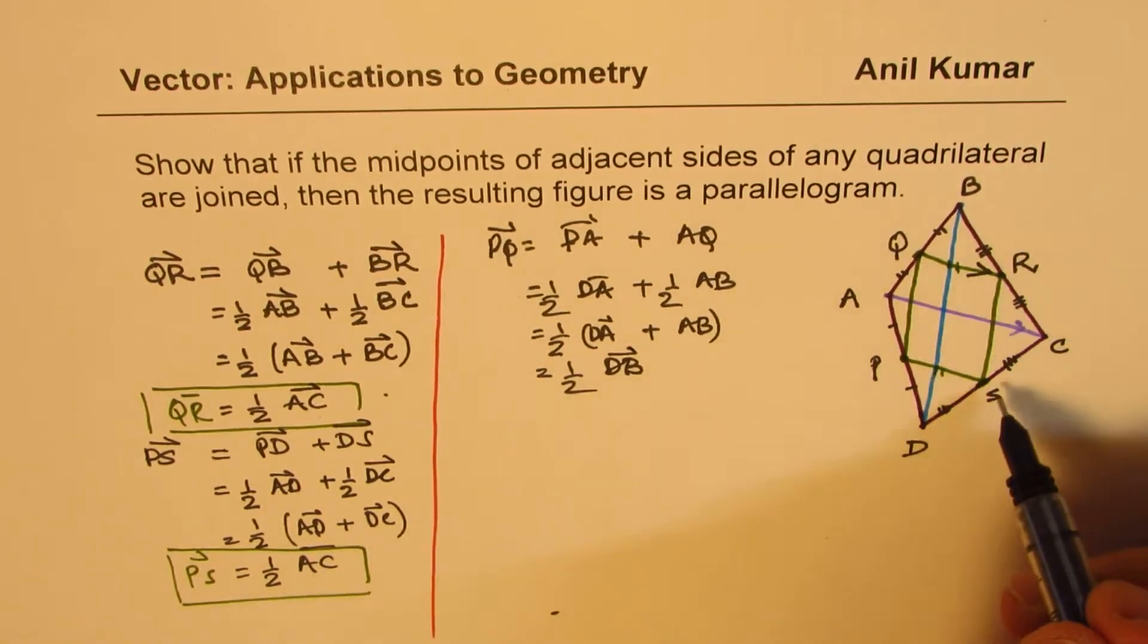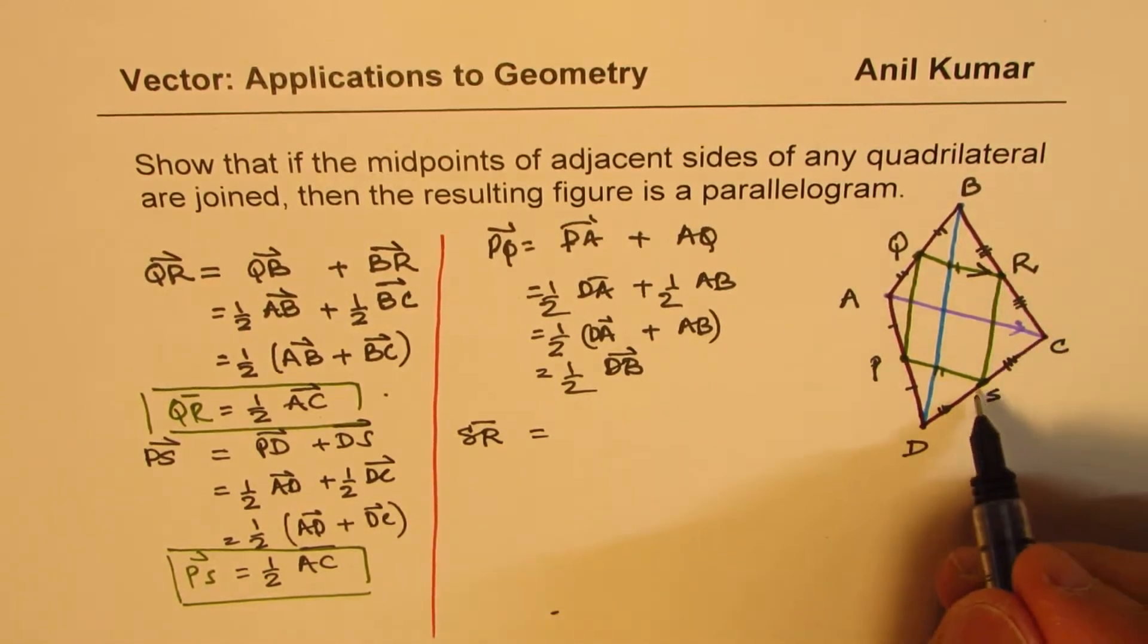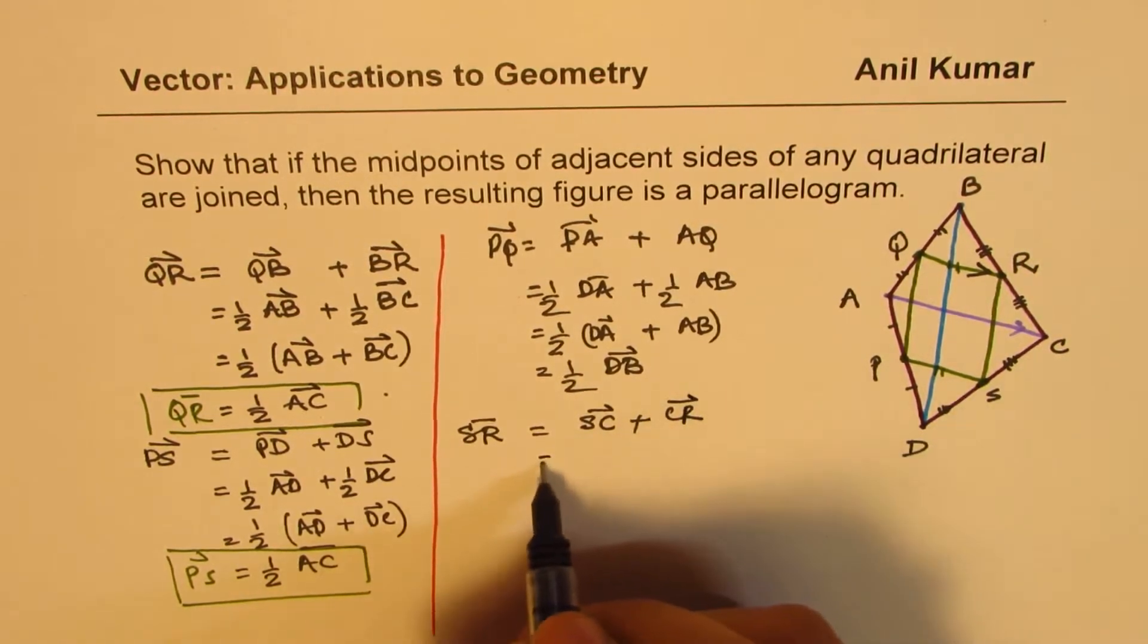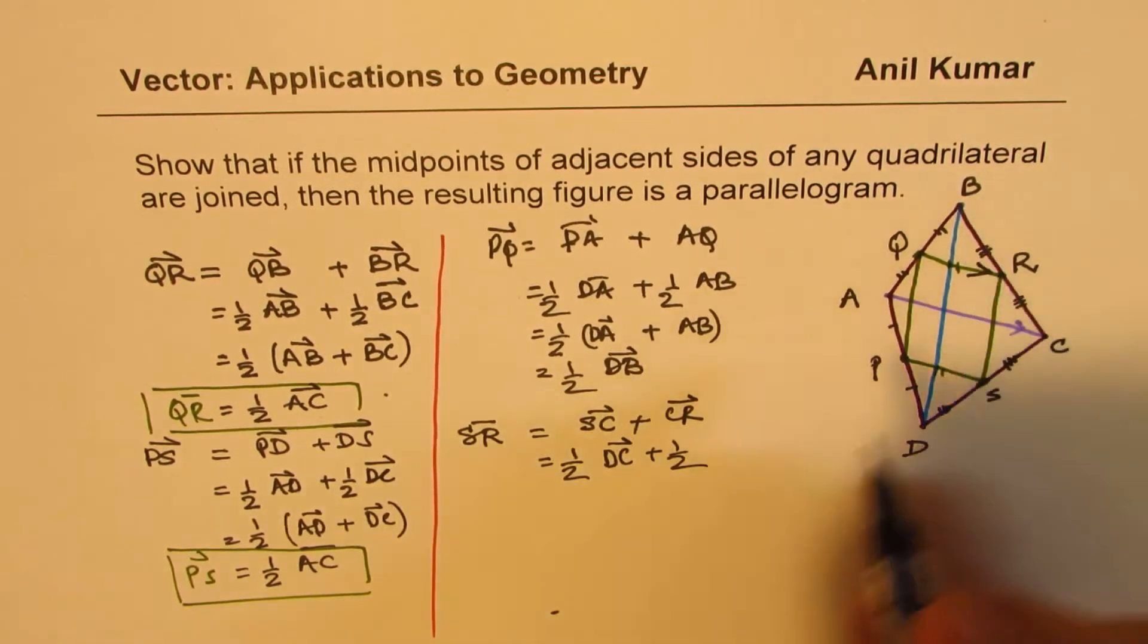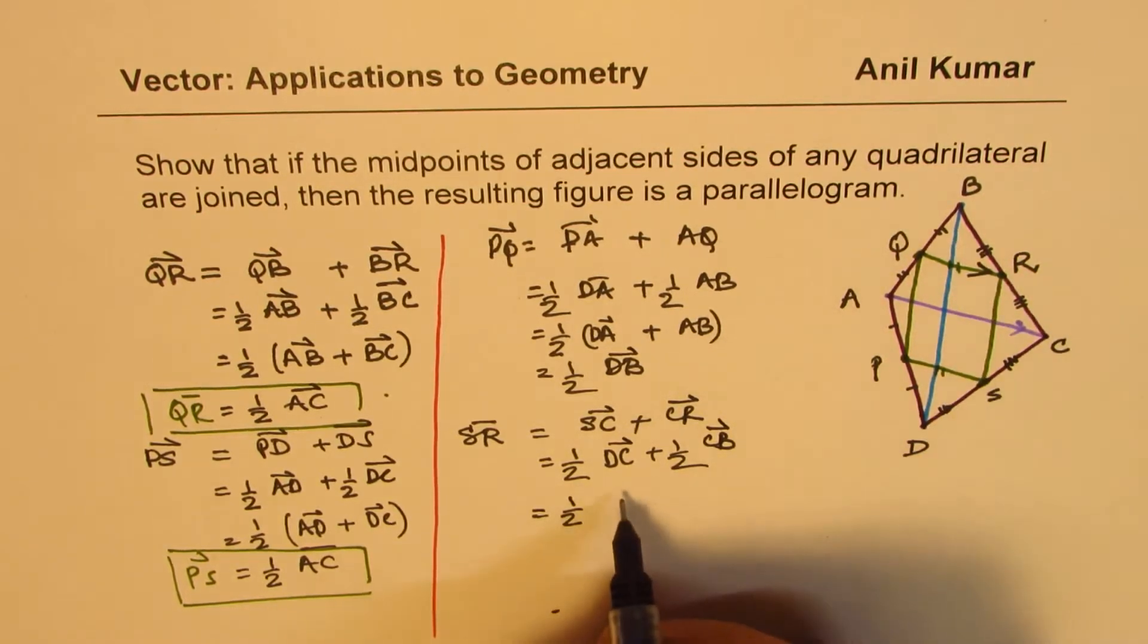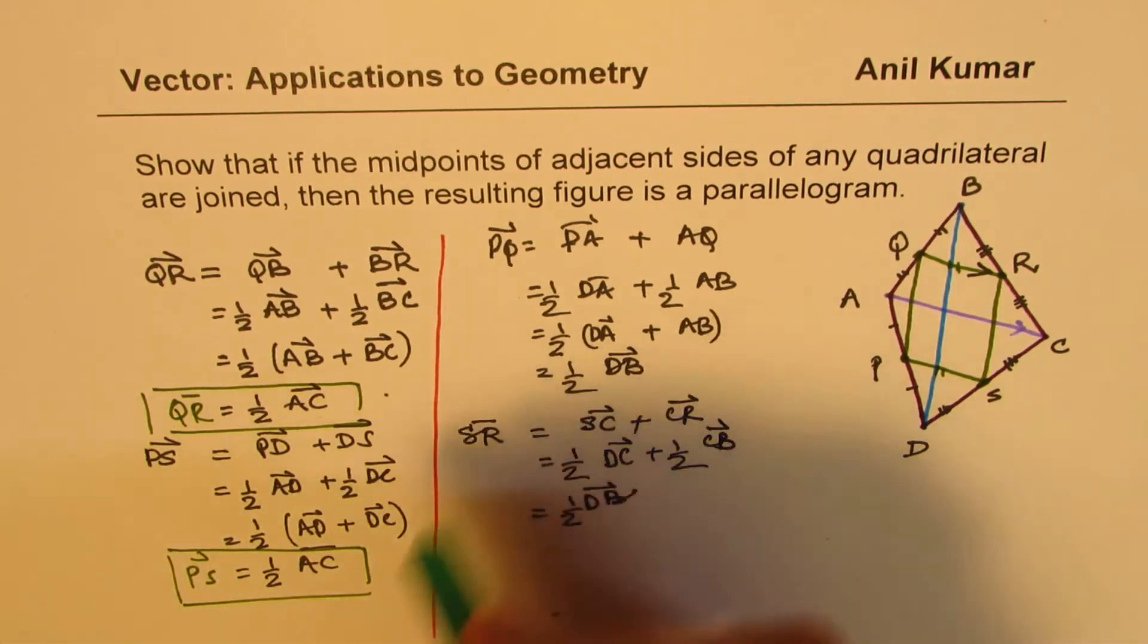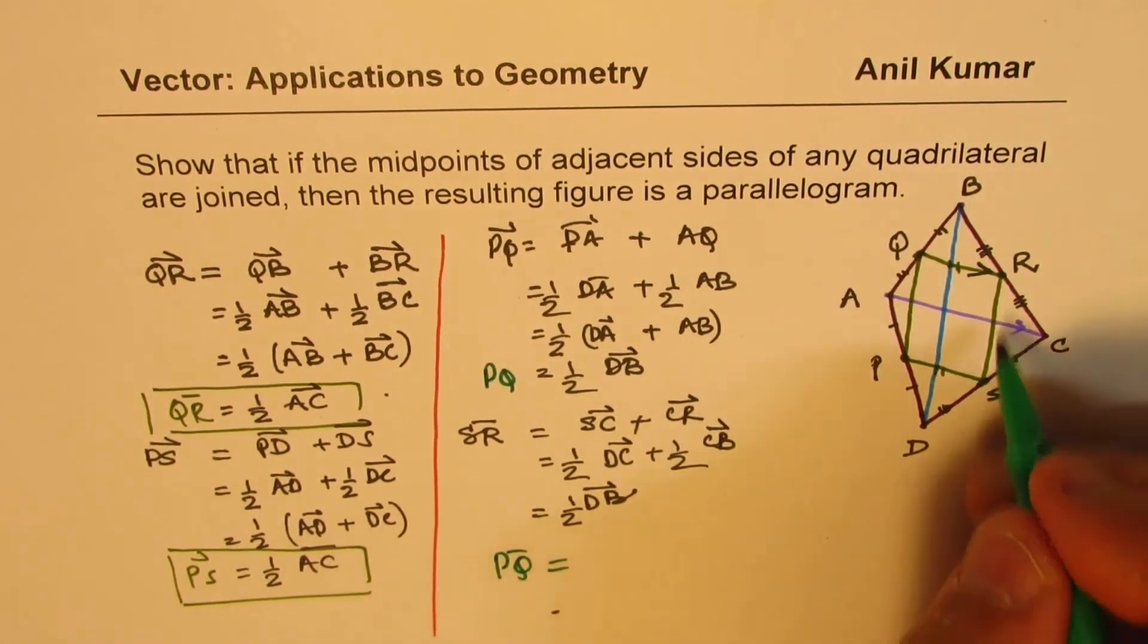So we got P, Q. Now let's see what SR is. So same strategy, S to R will be SC plus CR, which is half of DC plus half of CB. That means it is half of DC and CD is half of BD. So you can write this as half of DB. So again, we have shown that they are also equal.